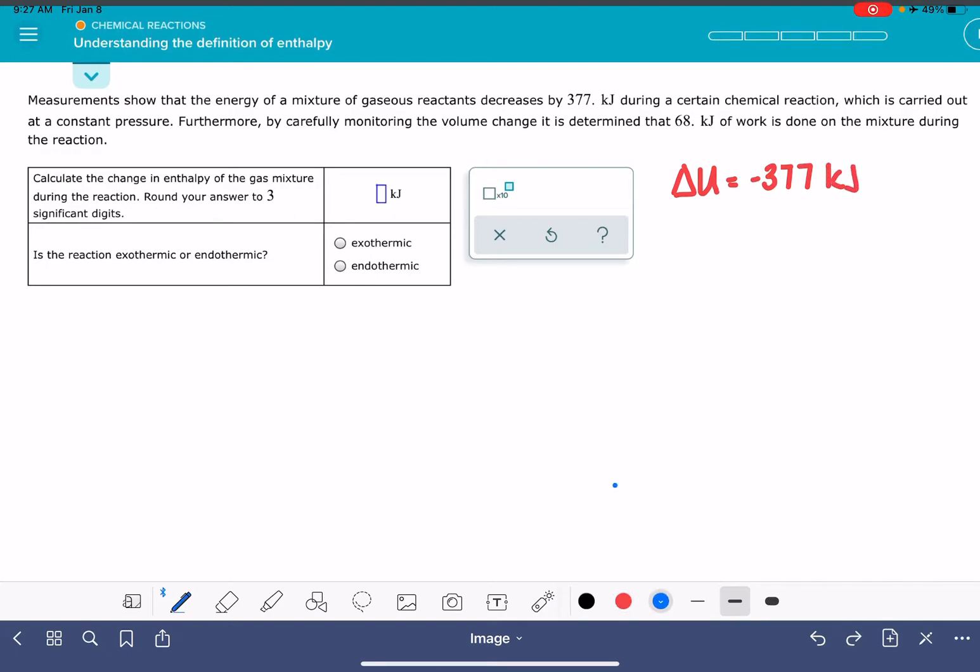So if the energy is decreasing, that will mean that we have a negative value of delta U. And if our energy is increasing, that will mean that we have a positive value of delta U.